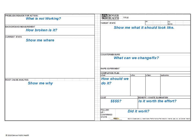Over the next few minutes, we will describe the steps to filling out an A3. Step 1: Start with a description of what is not working — what is broken, bent, or just plain worn out. Step 2: Tell how broken it is, usually with numbers showing how big the problem is and how long it has been going on. Step 3: Show where it is broken — this is usually a flow chart, spaghetti diagram, or stick figures walking through a process.